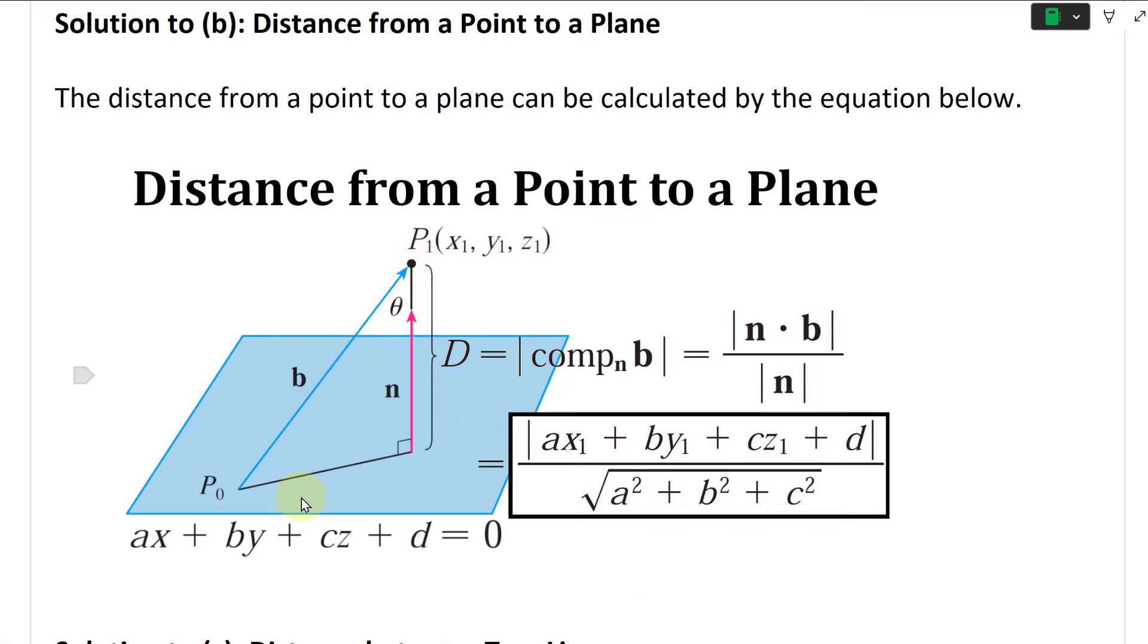So you have a point like that, and then you have this P naught and P1. It forms this B vector, and you have this n vector as the perpendicular one. Distance is going to be the full length here. This n vector could be small or big, you don't know what it is.